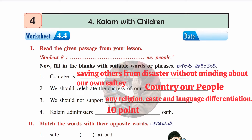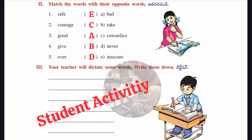Worksheet 4.4. The first section has a passage from 'Student Eighth to My People' with fill-in-the-blanks. Answers: first — courage is saving others from disaster without minding about our own safety; second — we should celebrate the success of our country and our people; third — we should not support any religion, caste and language differentiation; fourth — Kalam administers a ten-point oath.